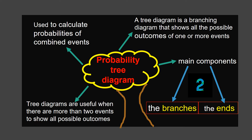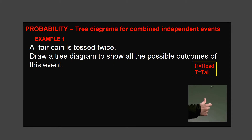Now let's see how we draw a probability tree diagram. Example 1: A fair coin is tossed twice. Draw a tree diagram to show all the possible outcomes of this event. You can use H for head and T for tail. To draw a tree diagram, make a dot to represent the first event. From the dot, branches are drawn to represent all possible outcomes. Here we have two possible outcomes: head and tail. Draw two lines from this dot, then write the outcome at the end of each branch.